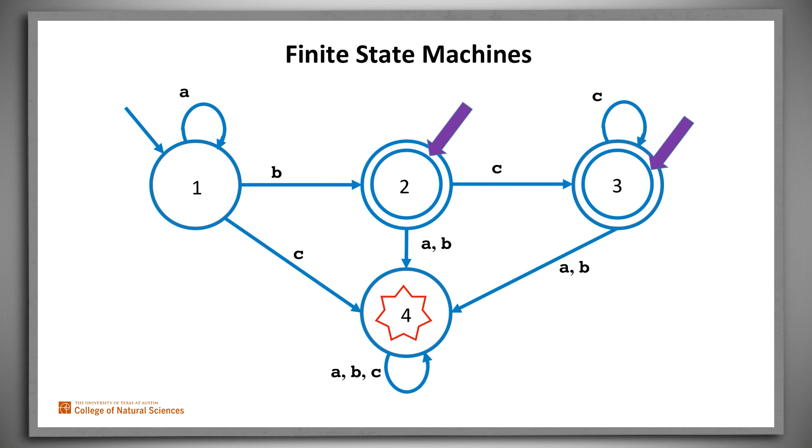Let's look at an example. On input A, A, B, C, the machine starts in state 1. It reads the first A and loops back to state 1. It reads the second A and again loops back to state 1. It reads the B and goes to state 2. Then it reads the C and goes to state 3. It's finished reading its input, it's in an accepting state, so it accepts.